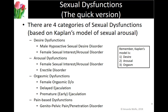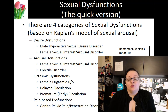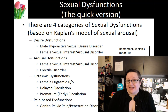We also have two arousal dysfunctions: female sexual interest and arousal disorder, which maps onto both of Kaplan's stages, and erectile disorder. For orgasmic dysfunctions there are three: female orgasmic disorder, when women do not orgasm or do not orgasm routinely; delayed ejaculation, when men do not ejaculate routinely; and premature or early ejaculation, where men orgasm more quickly than they desire.